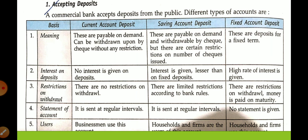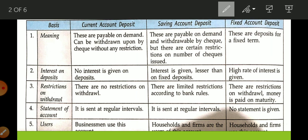We are going to learn how many types of deposits are run by the bank. A commercial bank accepts deposits from the public, and there are different types of accounts: first is current account, then saving account, then fixed account. This is very important for your board examination — it can be asked for one mark, three marks, and six marks.